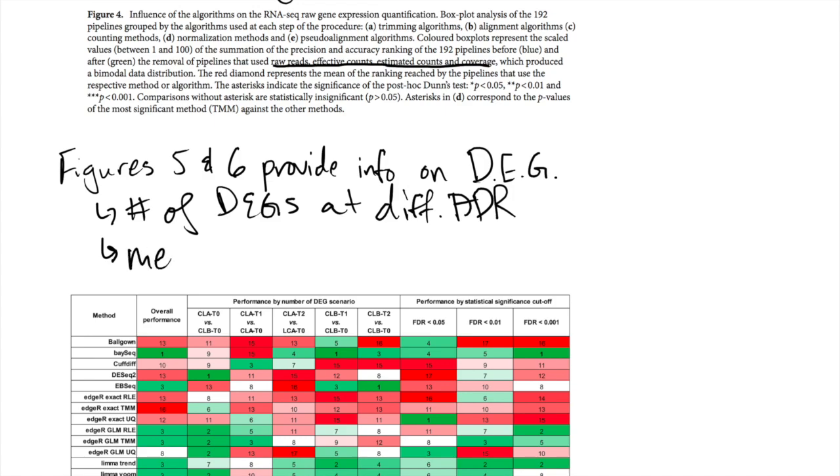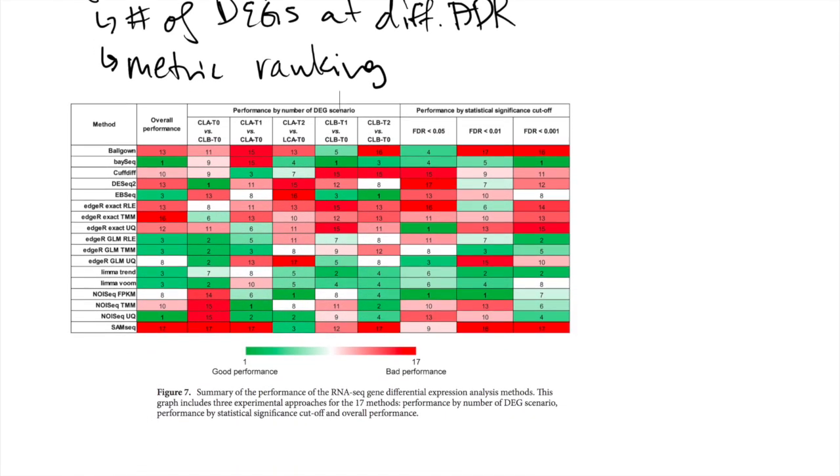And so I'll just put that as metric ranking. If you're interested in learning more, I'd highly recommend looking at figure six within the paper. Figure seven is the summary slide where they look at all the different methods and provide scores for their overall performances on a scale of one to 17, one being good, 17 being bad.